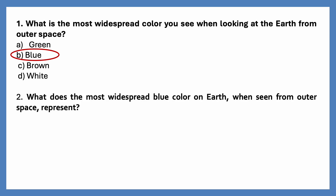What does the most widespread blue color on earth, when seen from outer space, represent? Options are forest, mountains, water, sky. The correct answer is water.